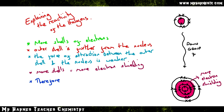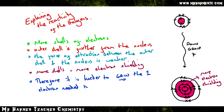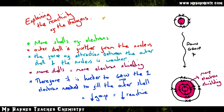Here's the difference between group one and group seven. Group one wants to lose an outer electron, but group seven wants to gain it. Therefore, because that force of attraction is weaker, it is harder to gain an electron, which makes it less reactive. Therefore, reactivity decreases as you go down group seven.